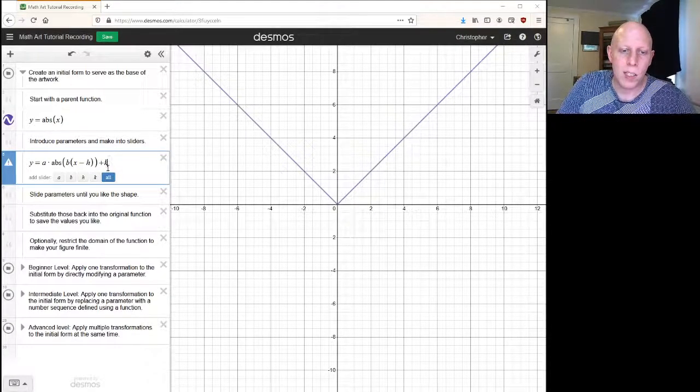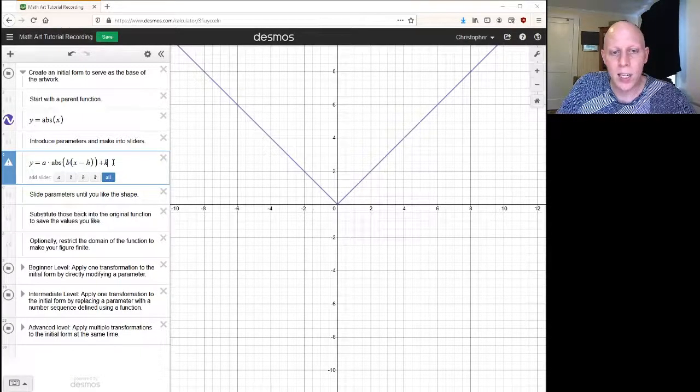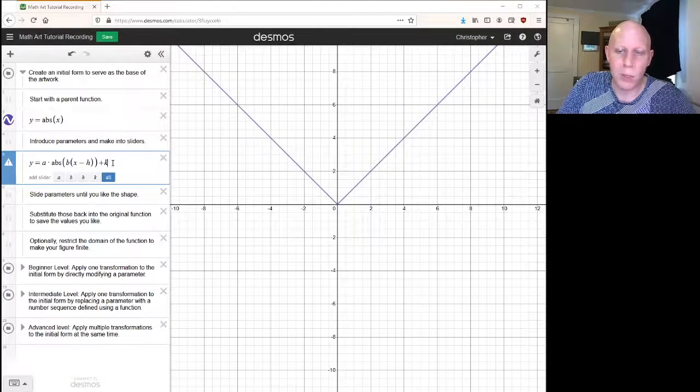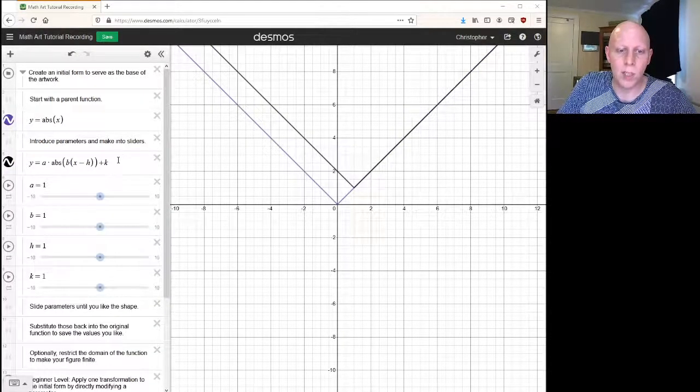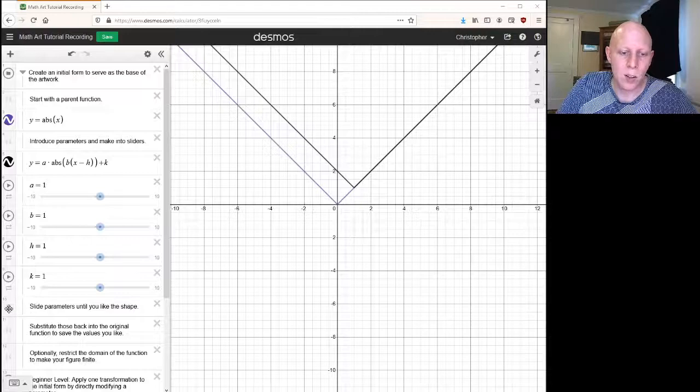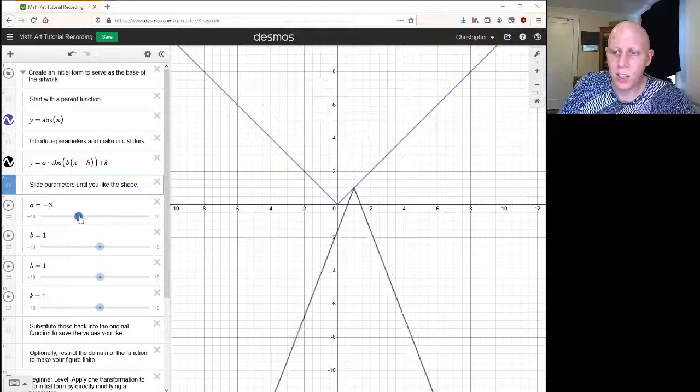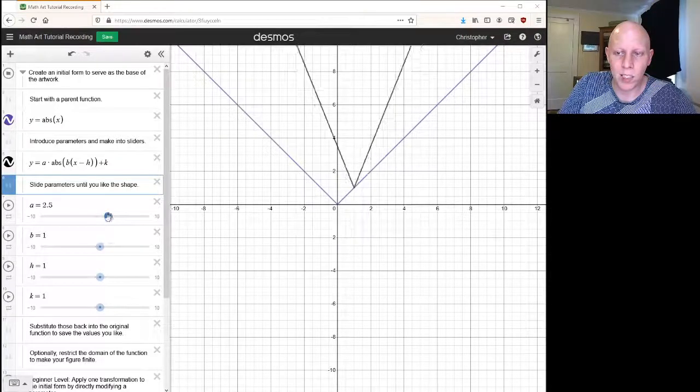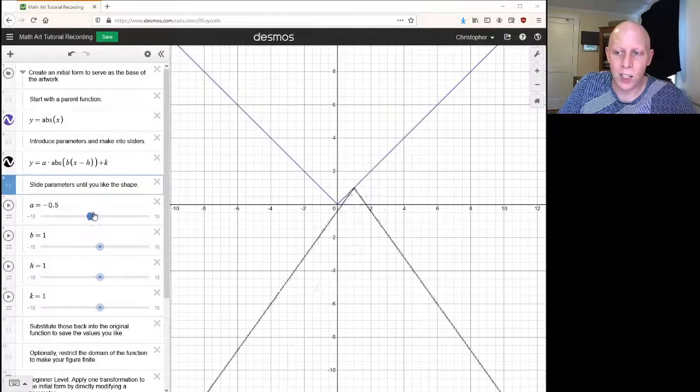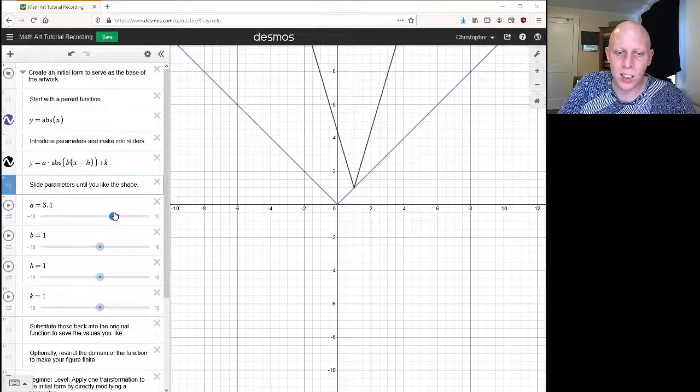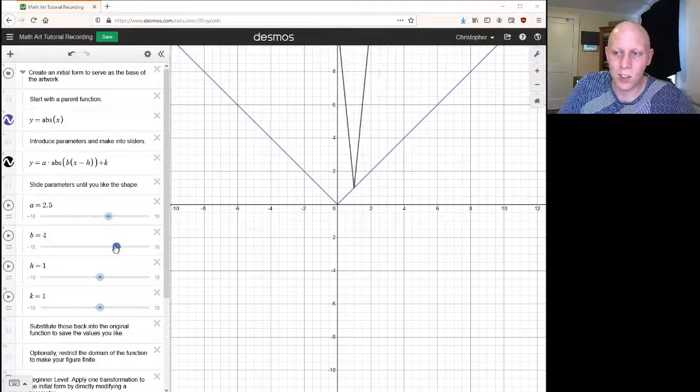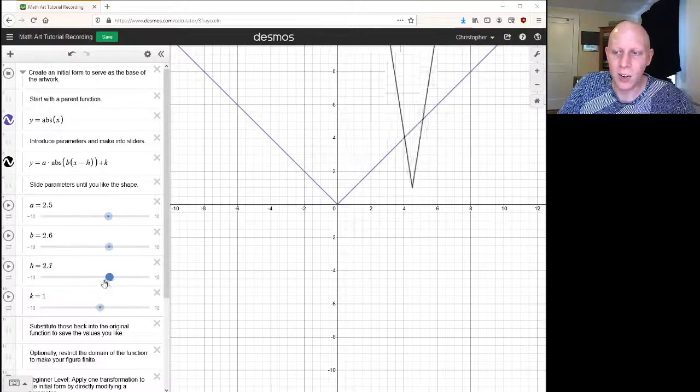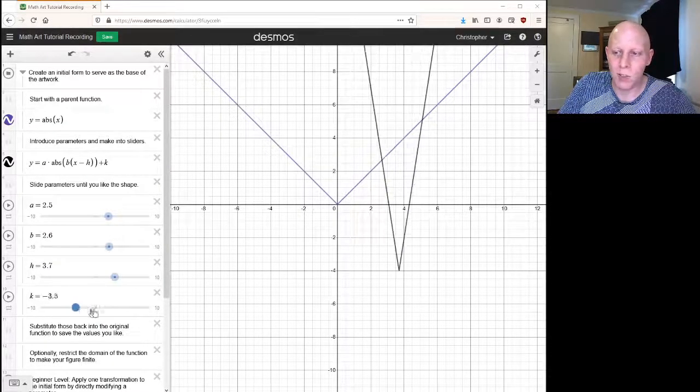The nice thing about Desmos is that we can take these parameters—right now they don't have any values—and we can add a slider for each of them. That allows us to change different bits: we can change the vertical dilation, the horizontal dilation, the horizontal shift, and the vertical shift.